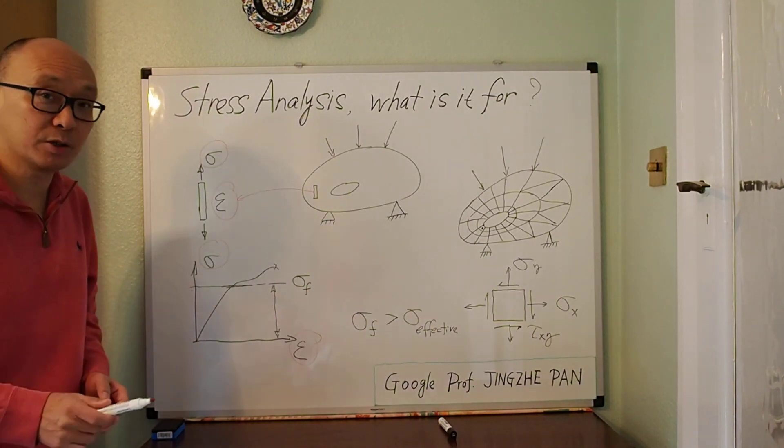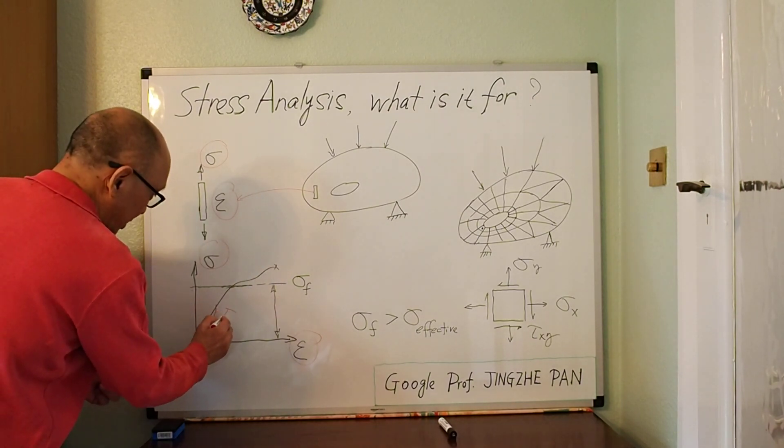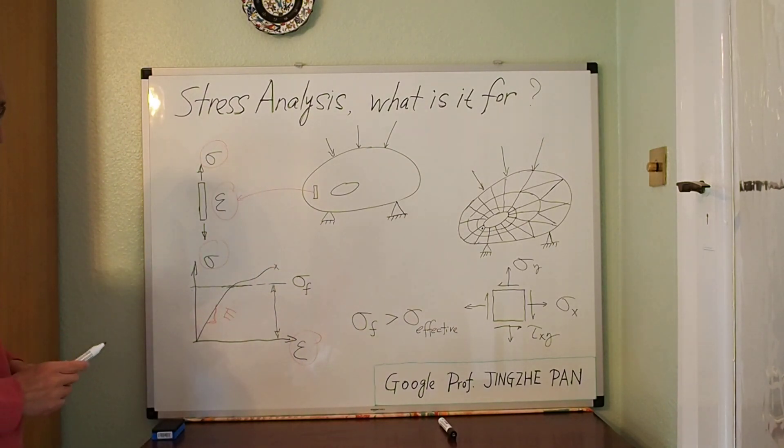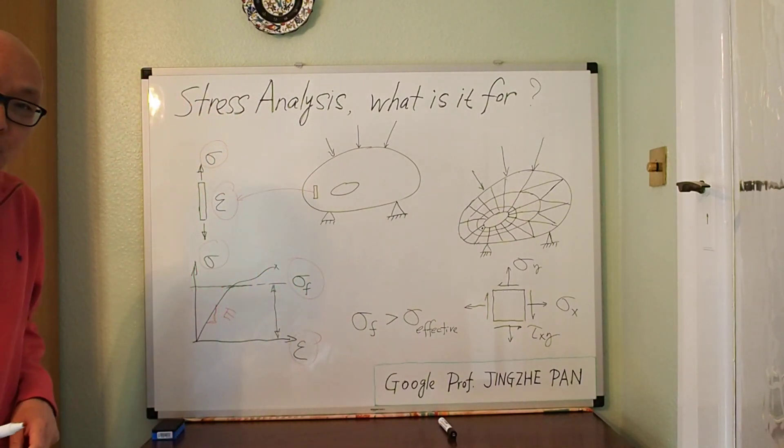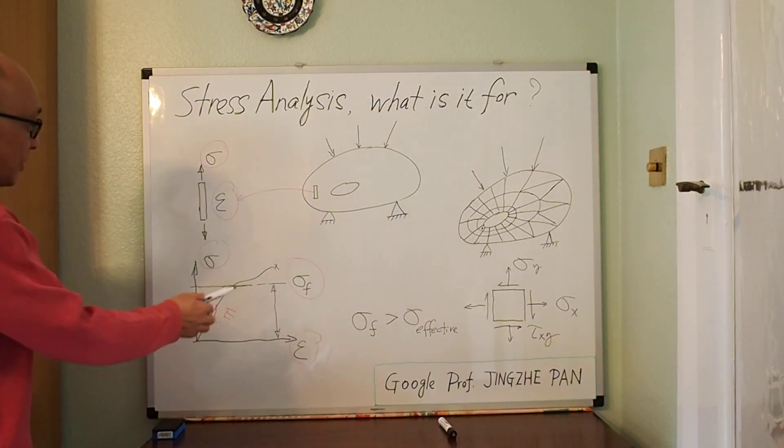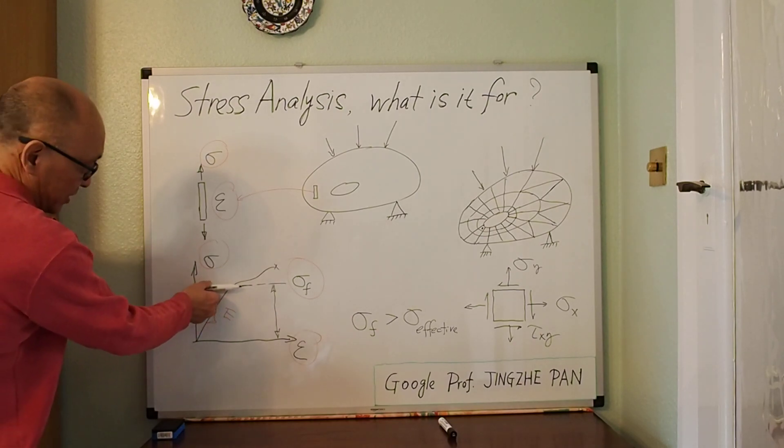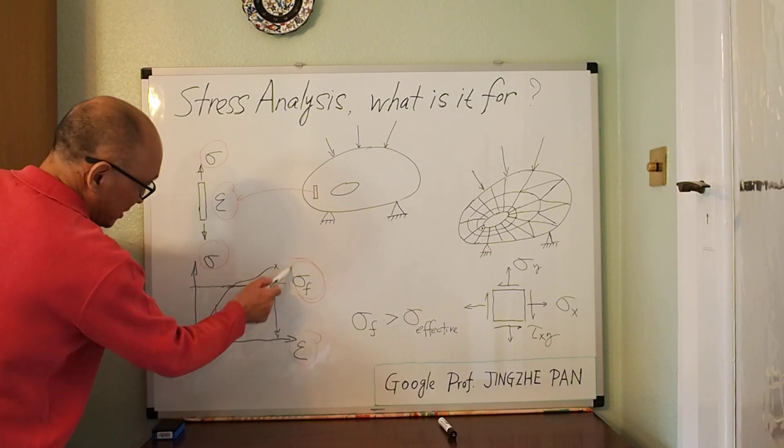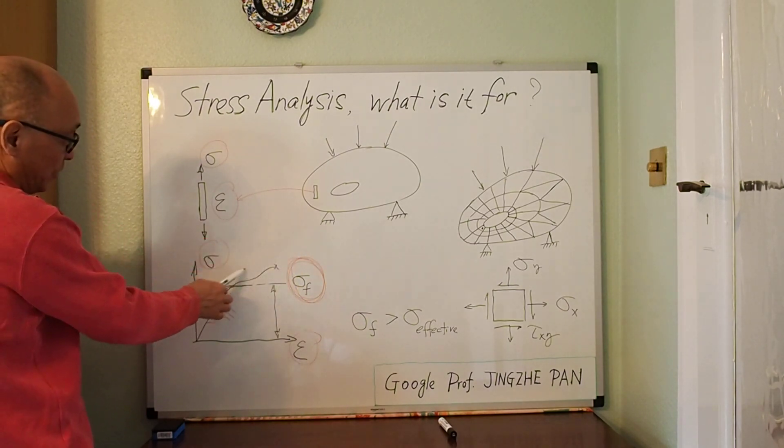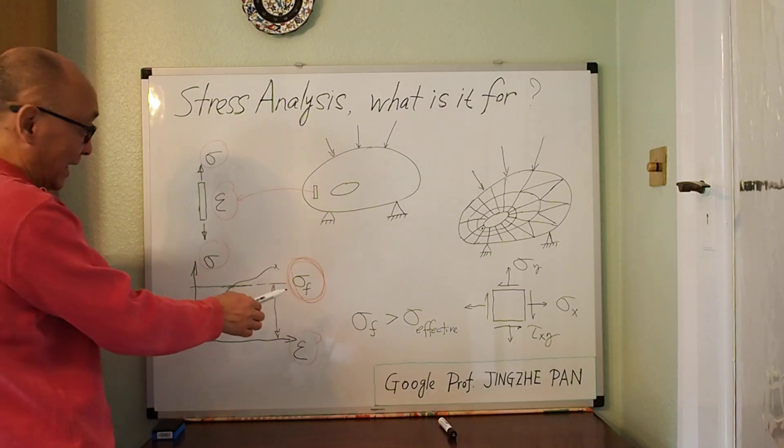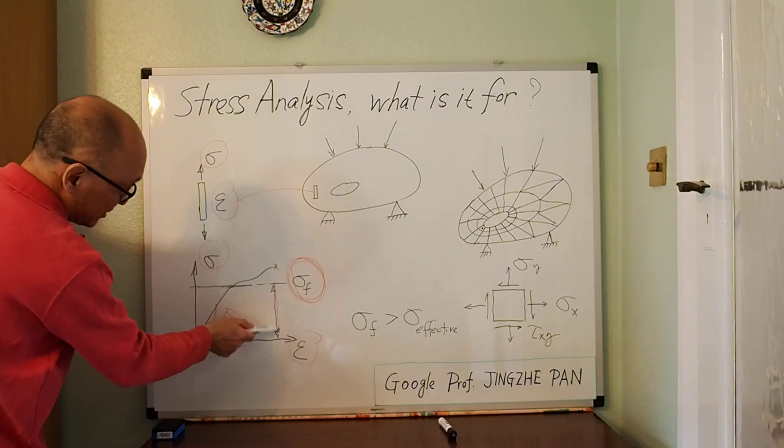Now, there are some key information you can get from this. One thing we all know is you can get Young's modulus from that. The gradient of this is what we call Young's modulus. You can get Young's modulus E out of this test. Another thing which is really important is you get the so-called strength of the material. And that's arbitrary because you can pick the strength here. And what I pick is, you know, the elastic range. Just pick the strength. So that is the maximum, this is the stress you worry about.